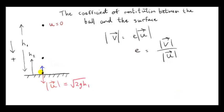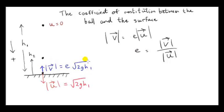The speed immediately after impact is less than the speed immediately before impact, because e is a number that's less than 1. So we call that v, and we just multiply e by u — e times u. Now we have some more information about the speed: we know that the speed is such that when the ball reaches a height h2, the velocity is 0.